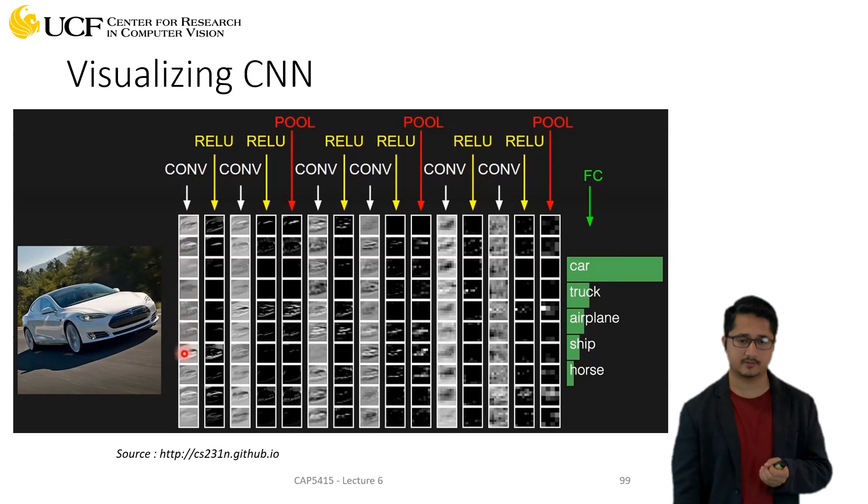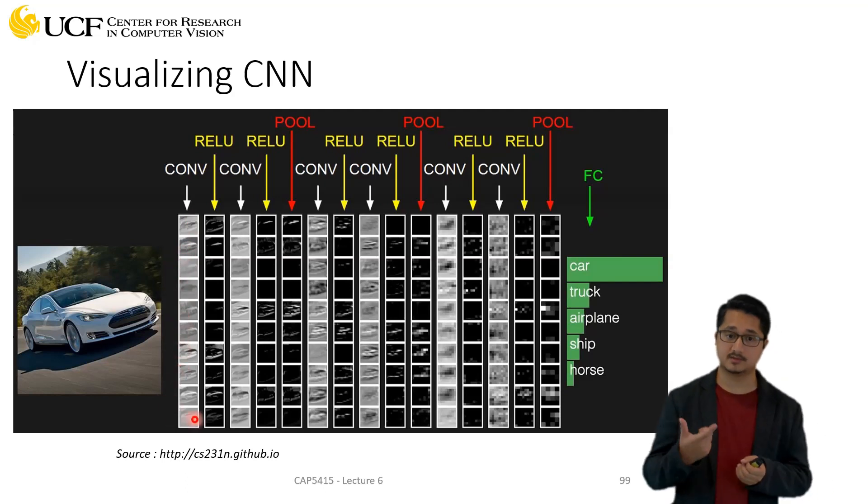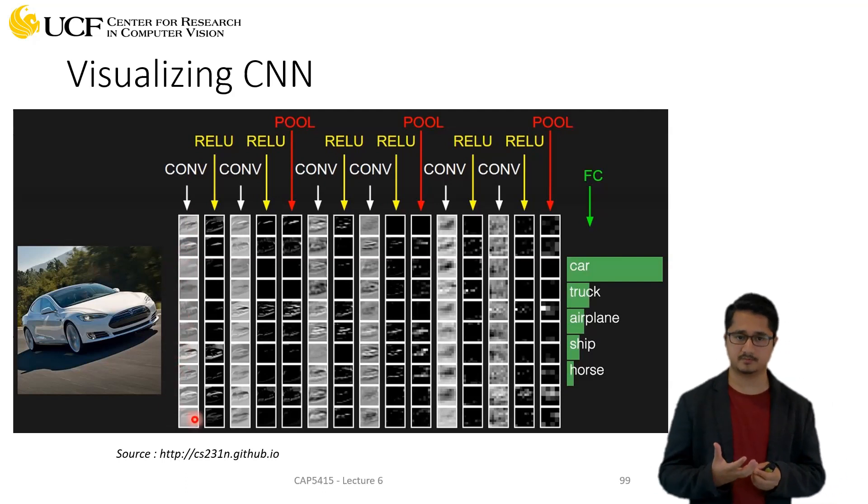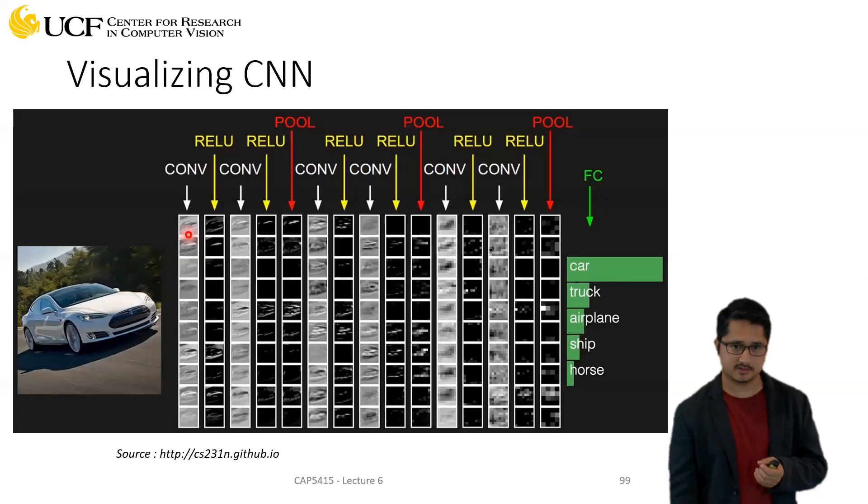All these are output from different filters, and since these filters are learned when you train the model, each filter will be different. When you perform filtering you're just trying to match that filter with the input image. If there is a match you will get high activation, and you can see that with different filters different positions are actually highly active.